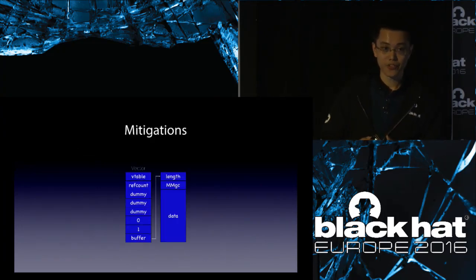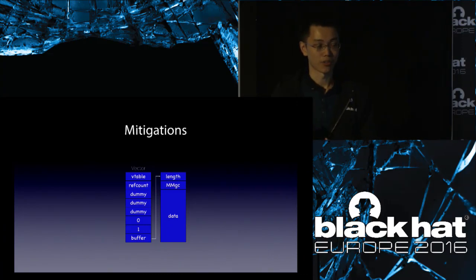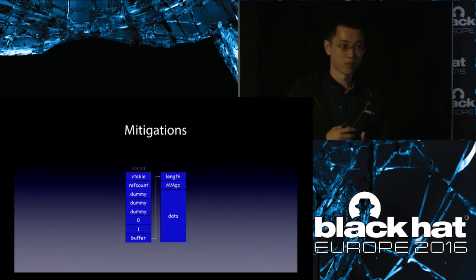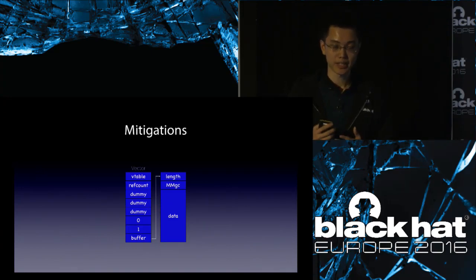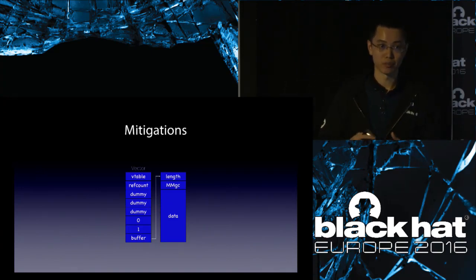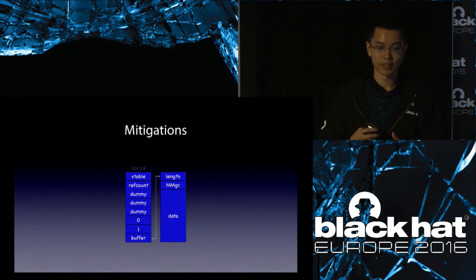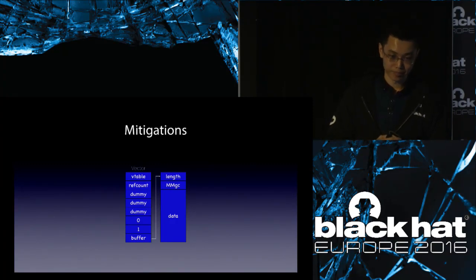Since the length field is located at the beginning part of the vector buffer, it's very convenient to be corrupted with various Flash or browser vulnerabilities. So this technique has been very popular for the past years, mainly because Adobe only fixed the vulnerability itself instead of mitigating the exploitation method.